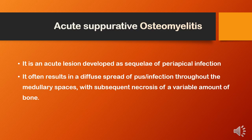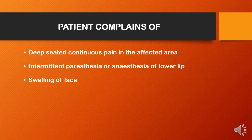Coming to the detailed aspects of osteomyelitis types, the first variety is acute suppurative osteomyelitis. It is an acute lesion developed as a sequel of periapical infection. It often results in a diffuse spread of infection throughout the medullary spaces with subsequent necrosis of a variable amount of bone. The patient complains of deep-seated continuous pain in the affected area, intermittent paresthesia or anesthesia of the lower lip due to involvement of the mandibular nerve, and swelling of the face.